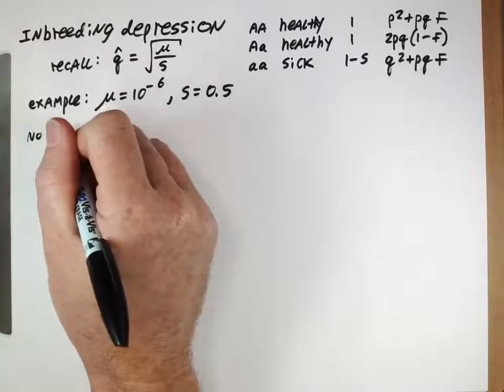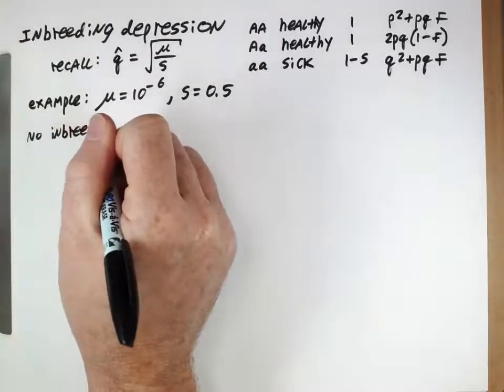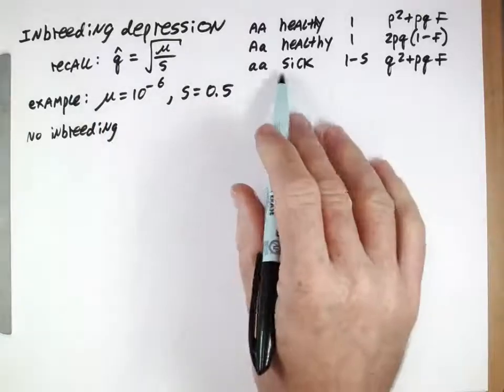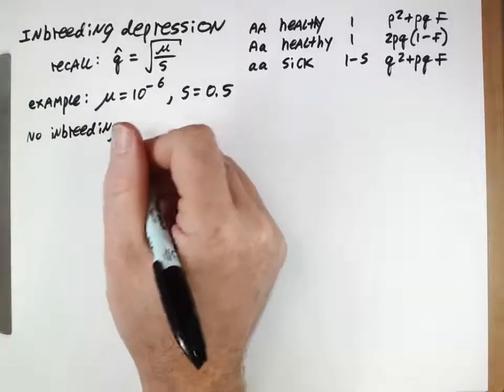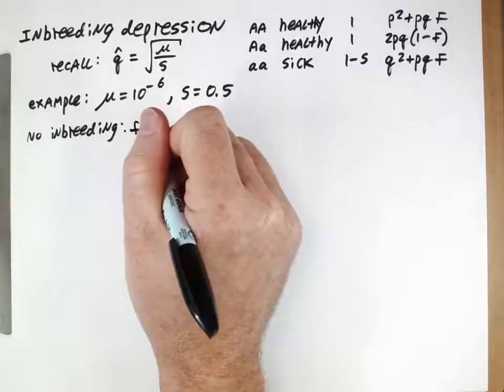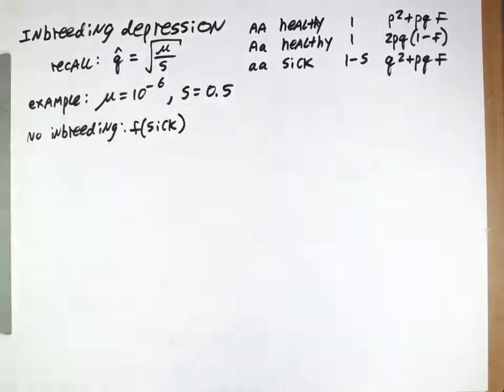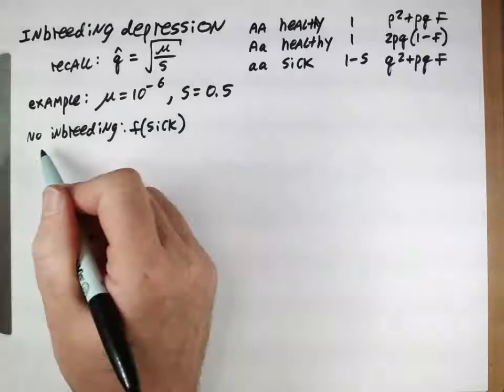Let's think about first of all a population that has no inbreeding. What are the frequencies of these sick individuals in that population? We want to calculate what's the frequency of sick individuals.